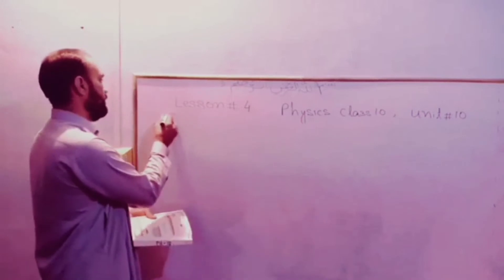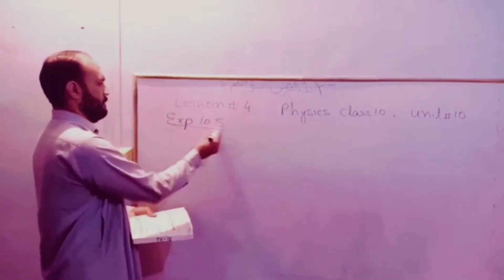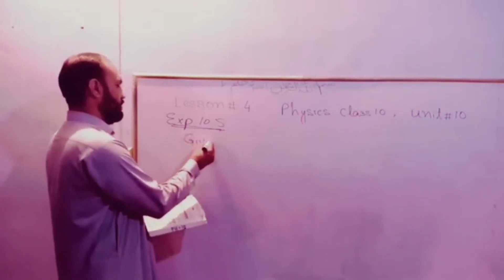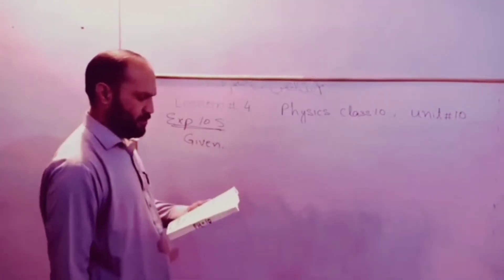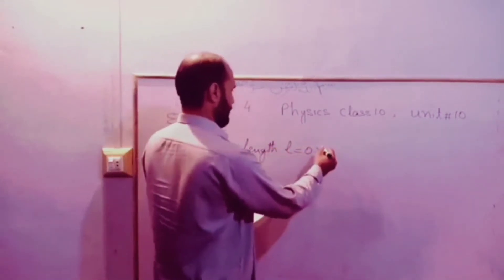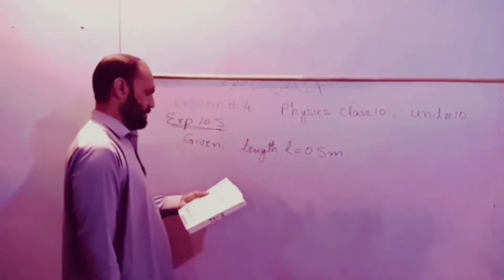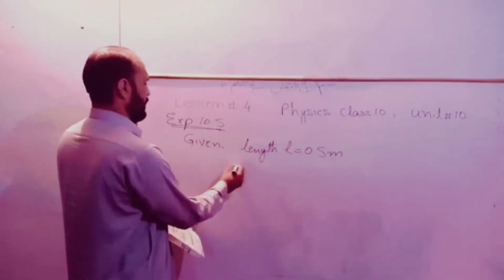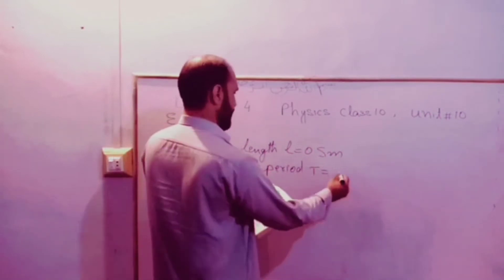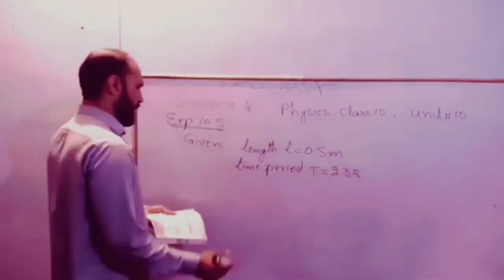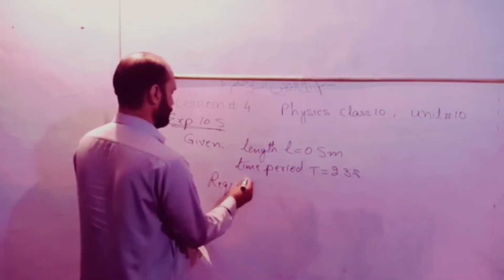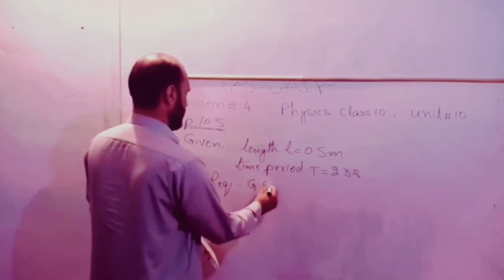Example 10.5: What is the gravitational field strength on planet Mercury? A pendulum with a length of 0.5 meters has a period of 2.3 seconds. We need to find the gravitational field strength. Given: T equals 2.3 seconds.